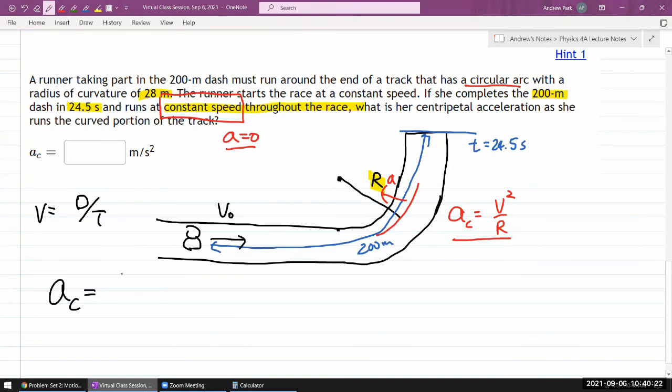The distance that she runs is 200 meters divided by time 24.5 seconds—make sure to square it—V squared divided by the radius of curvature 28 meters. When you work out the units, they should work out to be meters per second squared. Let me just type this.